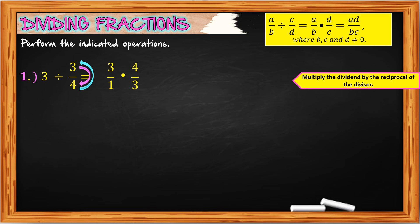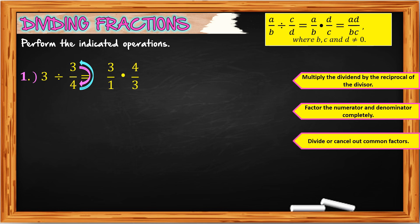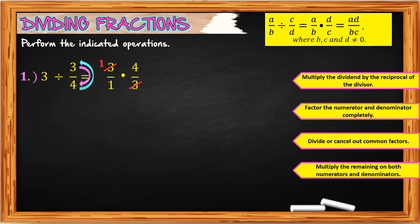The numerator turns into the denominator, and the denominator turns into the numerator. Then factor the numerator and denominator completely so that we can divide or cancel out common factors. So 3 divided by 3 is equal to 1. Then multiply the remaining: 1 times 4 is equal to 4 over 1, and 4 divided by 1 is still 4.